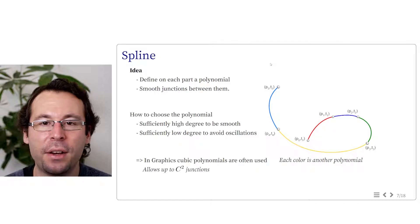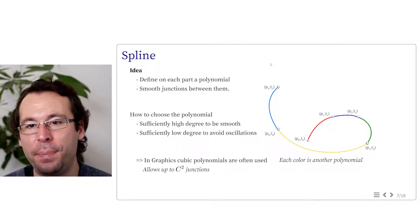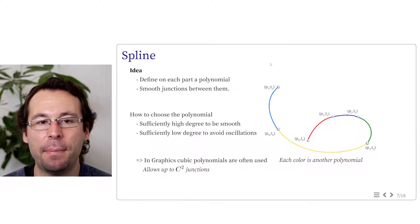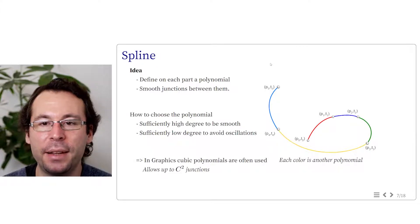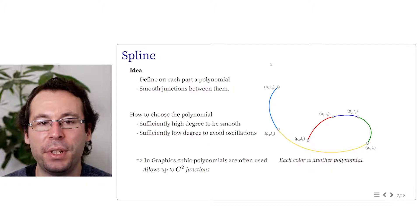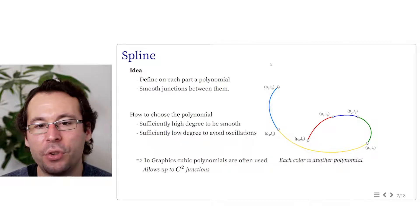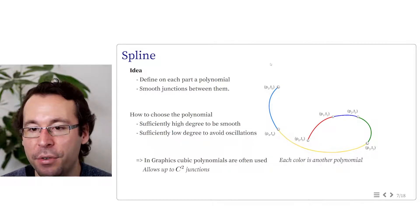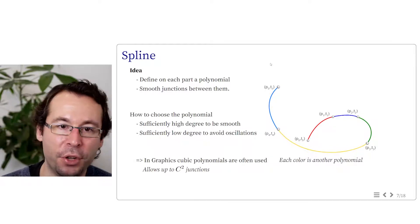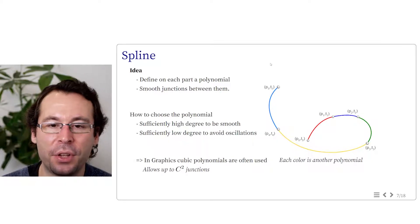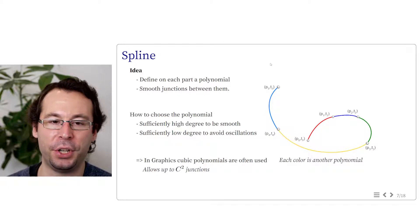So there comes the idea of spline. Basically, a spline curve is a curve which is defined piecewise by different polynomials on each part and such that the junctions between each part remain smooth. So how can we choose these polynomials? It should have a sufficiently high degree to be smooth, at least visually. But it should have a sufficiently low degree to avoid the oscillation we saw with the Lagrange interpolation.